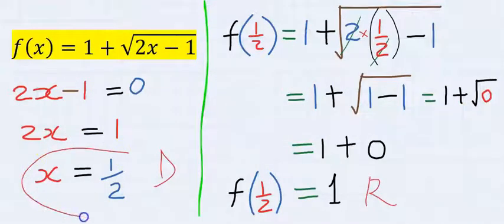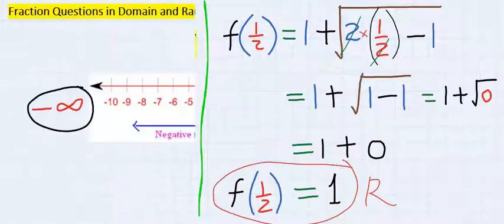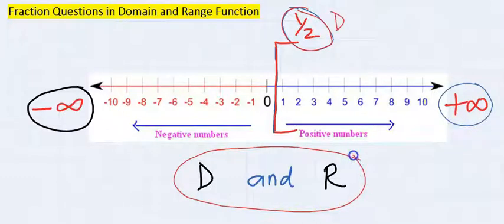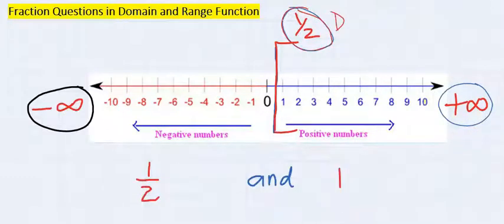And at the domain equal to 1 over 2, the range is equal to 1. And our answer will be represented in the form of domain and range. When the domain is 1 over 2, the range gives us 1.